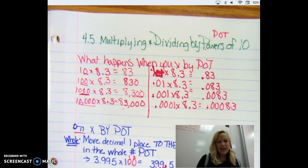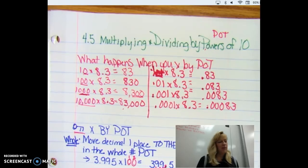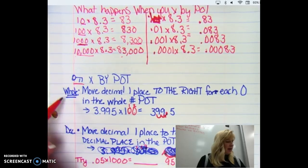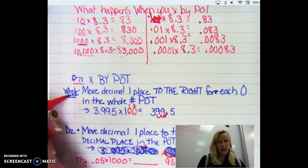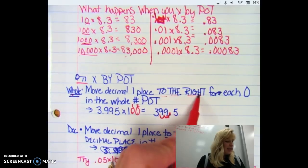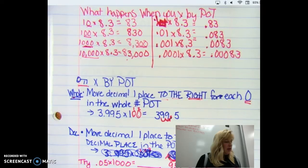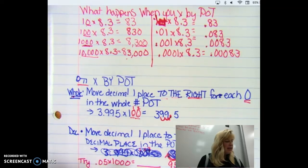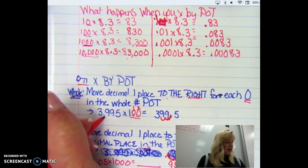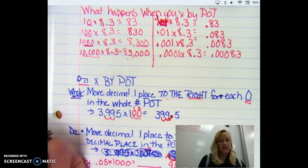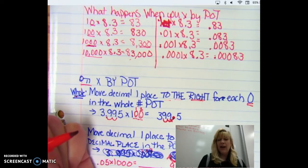So what's happening here? You see the pattern when we multiply. Let's get a little bit more technical. So when you look at the key concept, when you multiply a number by a whole number power of 10, you're going to move one decimal place to the right for each zero. So for instance, if we have 3.995 times 100, I see two zeros. And I'm going to start right here and I'm going to move it two places. So I'm going to place that decimal right there before the five. So it becomes 399.5.